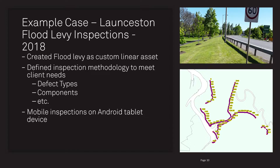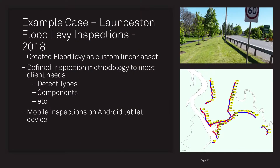Here's an example case from 2018 done at our Launceston office. We did some flood levy inspections for the Launceston City Council. We created a flood levy asset type as a custom linear asset and defined an inspection methodology to meet the client's needs, including defect types and components. We did mobile inspections on an Android tablet device. There's a photo taken during those inspections and a map — a GIS representation of the flood levees around Launceston overlaid over a map of the Tamar River — which allows you to pinpoint the location of defects and easily see where the problems lie.